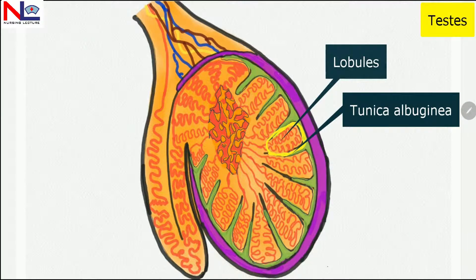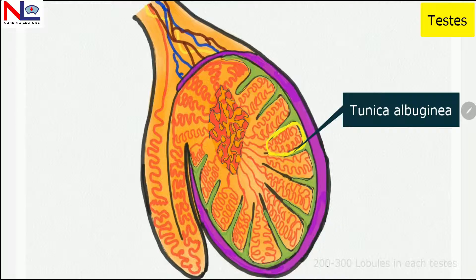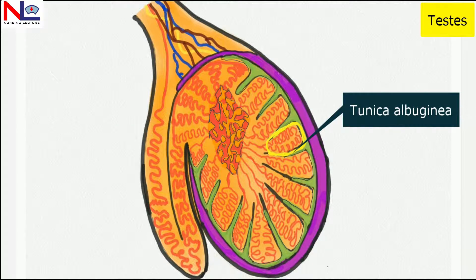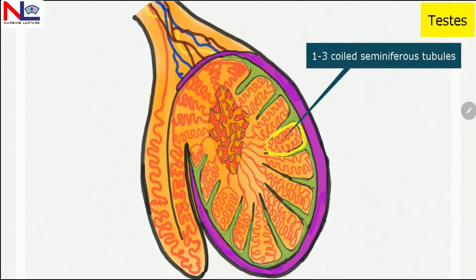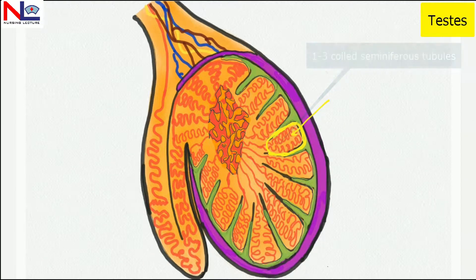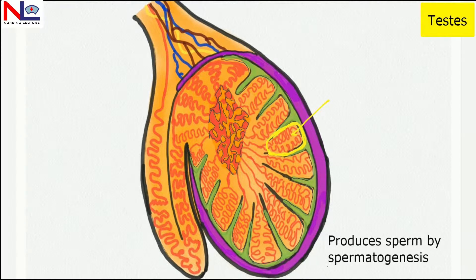Within each testis there are 200 to 300 lobules, and each lobule consists of 1 to 3 coiled seminiferous tubules. These seminiferous tubules produce sperm, and this process is termed spermatogenesis.